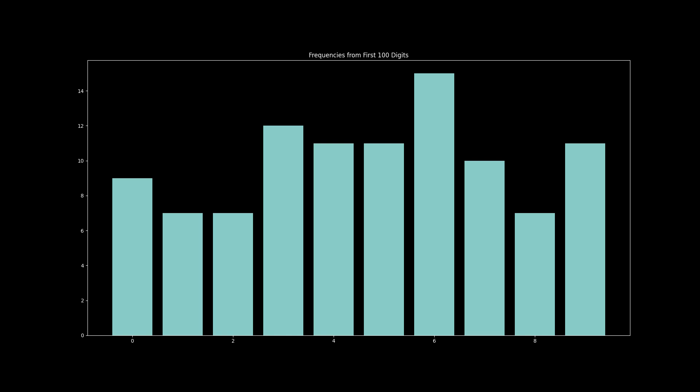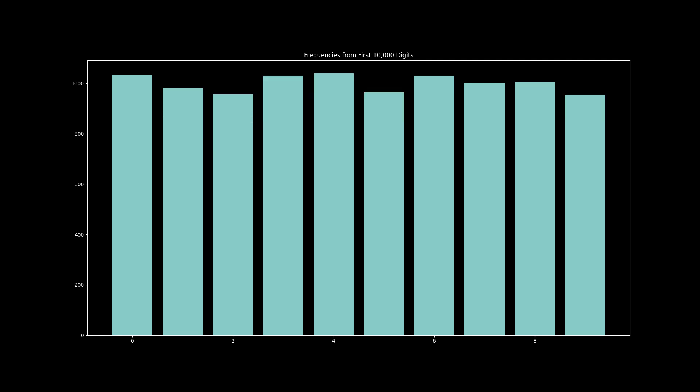Take a look at this plot of the frequencies of 0 through 9 in the first 100 digits of pi. And now the first 1,000 digits, 10,000, 100,000, a million. The more digits we look at, the more evenly distributed they seem to be.